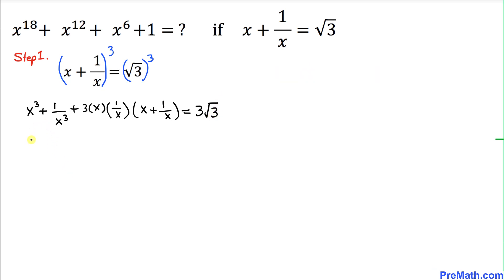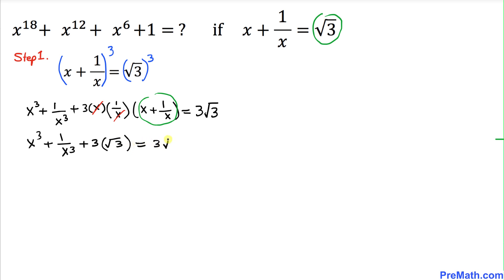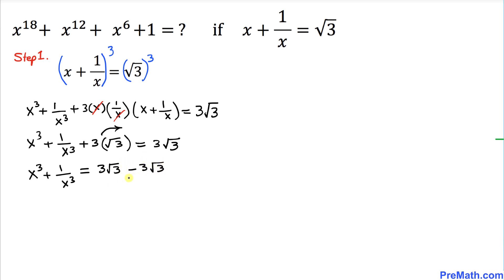Now in our next step, we simplify x power 3 plus 1 over x power 3. The x and 1 over x cancel, so we are left with plus 3 times x plus 1 over x. We know that value is square root of 3, so replacing that gives 3 times square root of 3 equal to 3 times square root of 3. Moving that term to the right hand side yields 0, so x power 3 plus 1 over x power 3 equals 0.